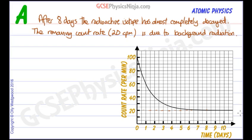This data includes background radiation, so before we process it and calculate the half-life, we need to take away the background radiation count. In any radioactivity experiment you should first measure the background radiation count and then subtract it from any measurements made on your radioactive isotopes.